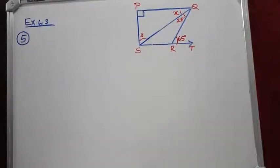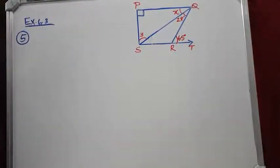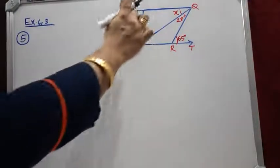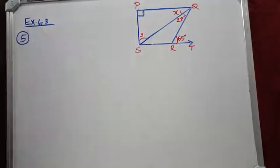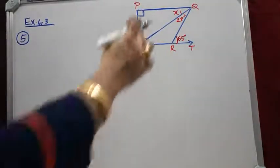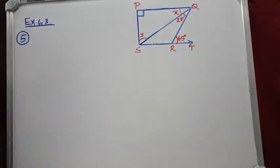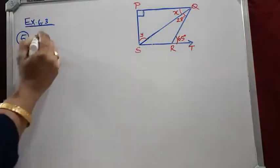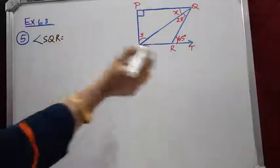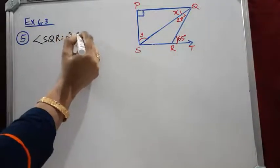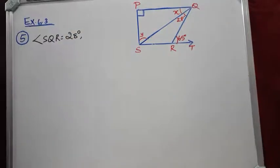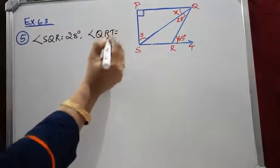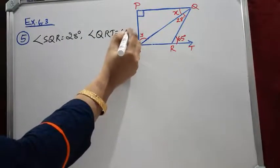Question number 5: In the figure, PQ is perpendicular to PS, PQ and SR are parallel lines. Angle QRS is given as 28 degrees, and angle QRT is given as 65 degrees. We are asked to find the values of X and Y.